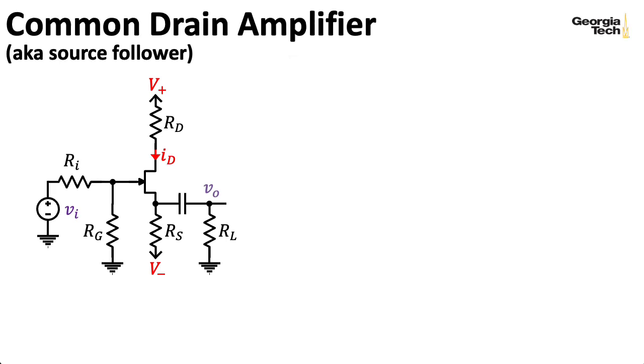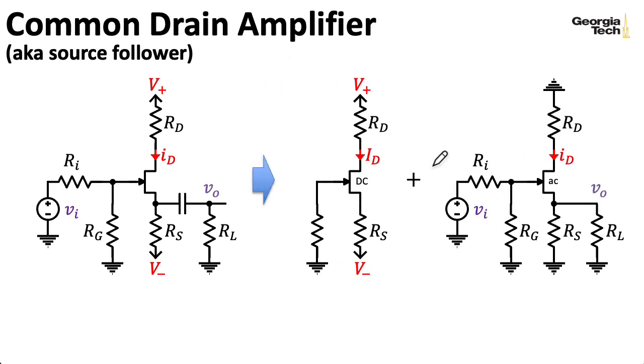So as usual, we split this up into the DC bias circuit and the small signal AC circuit. And to get the DC circuit, I open up this cap, and I zero the small signal source. Technically speaking, this resistor here would be RI in parallel with RG. But I haven't bothered to label it, because for the JFET case, we're assuming that the current flowing through the gate is negligible. And since no current is flowing through the resistor, no voltage is being lost. So I can just imagine a ground sitting here.